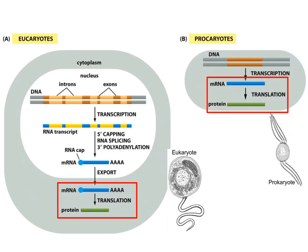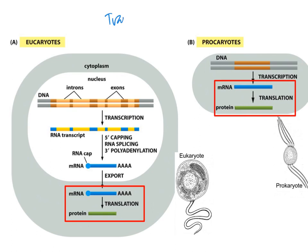Hi, Team Science. Today we're going to talk about translation. We've already talked about DNA replication. We've talked about transcription, and those things occur in both eukaryotes and prokaryotes. We've talked about processing of the RNA that includes adding a 5-prime cap, splicing out the introns, and adding a poly-A tail, and that's something that only occurs in eukaryotes. But today, we're going to talk about translation from mRNA into a protein, a process that occurs in eukaryotes and prokaryotes.